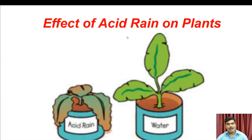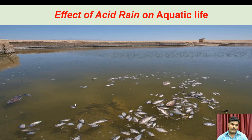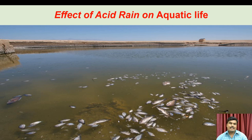The effect of acid rain on plants: normal rain water promotes plant growth, but acid rain inhibits plant growth. The effect of acid rain on aquatic life: when acid rain mixes with river water, pond water, or other aquatic areas, the acidic pH level increases. Under acidic conditions, fish and aquatic animals cannot survive and eventually die.